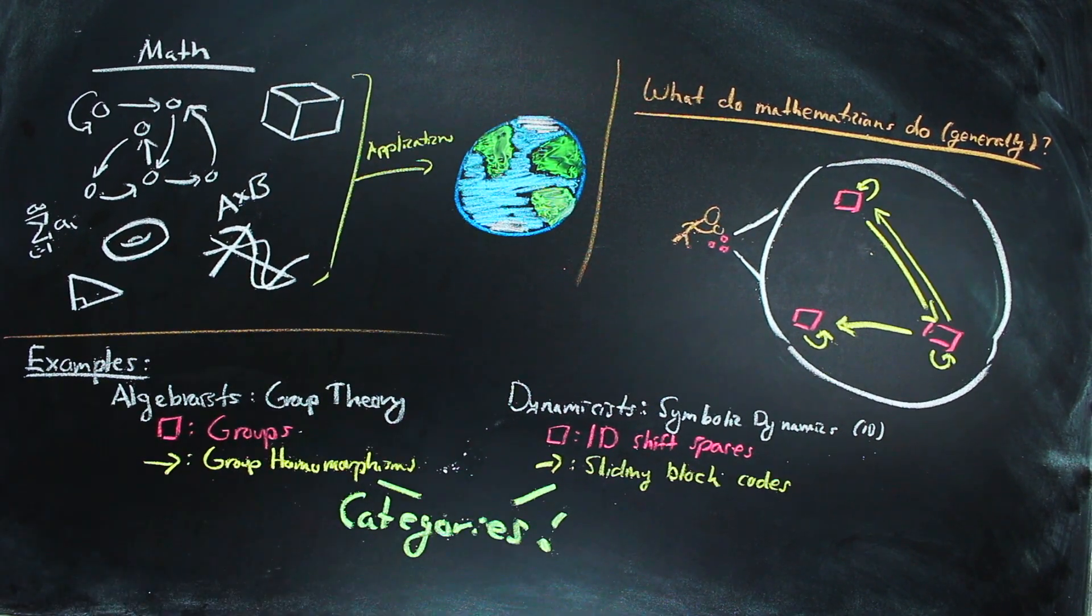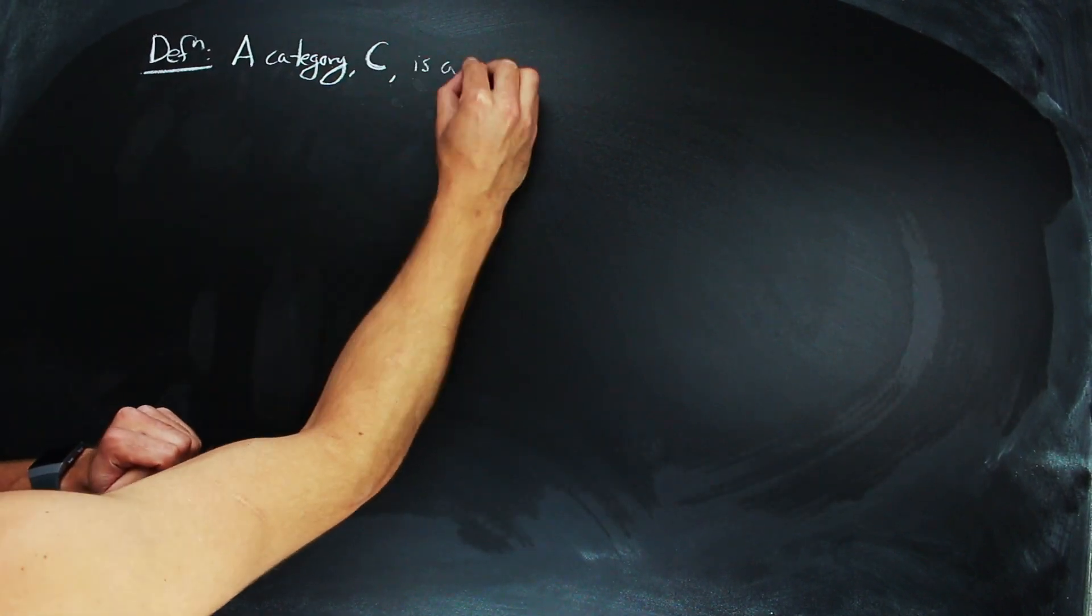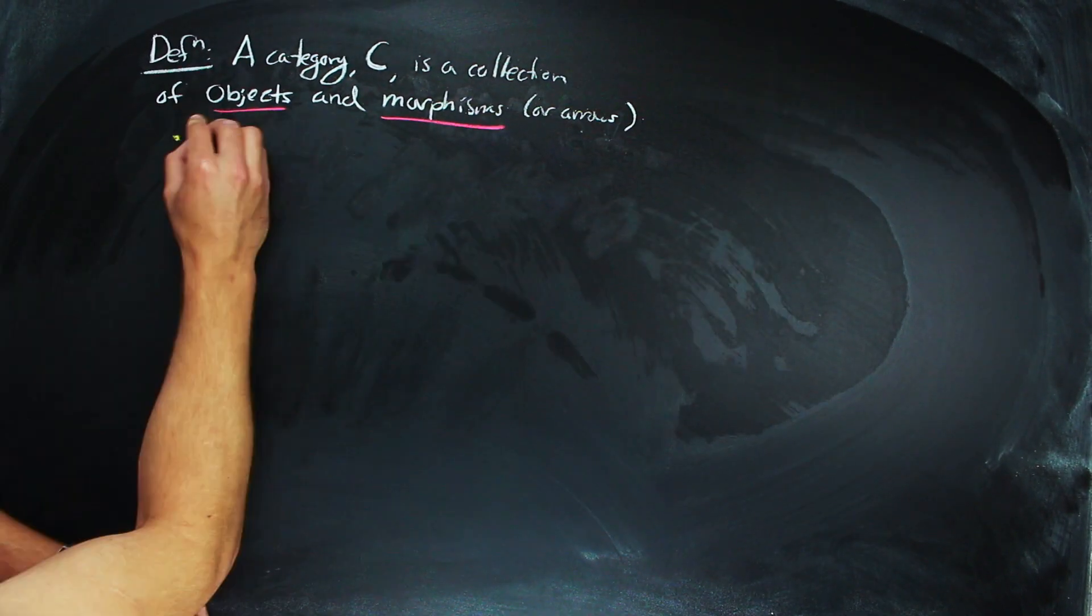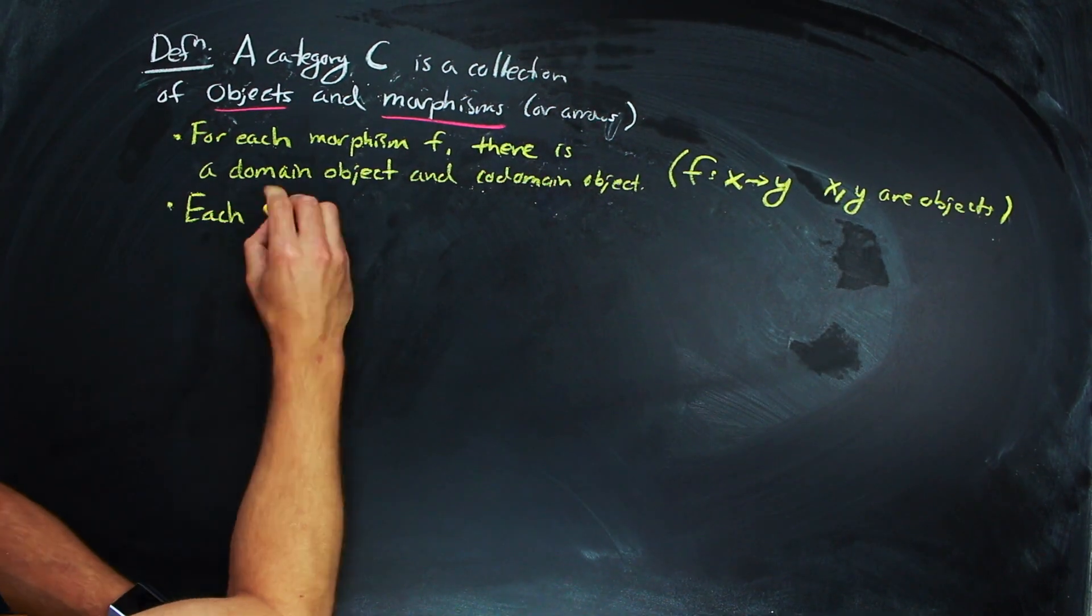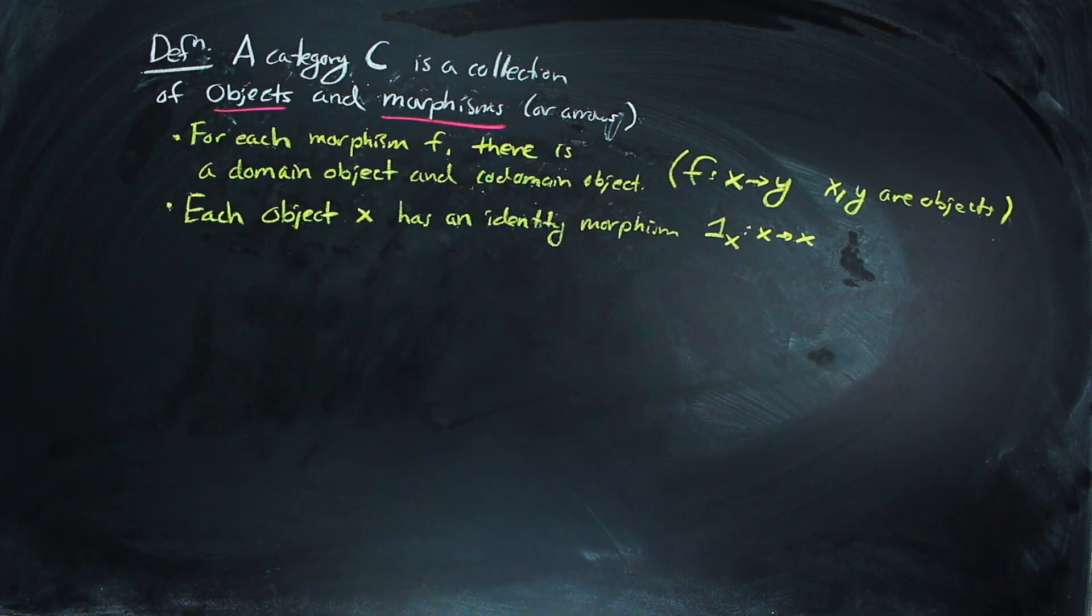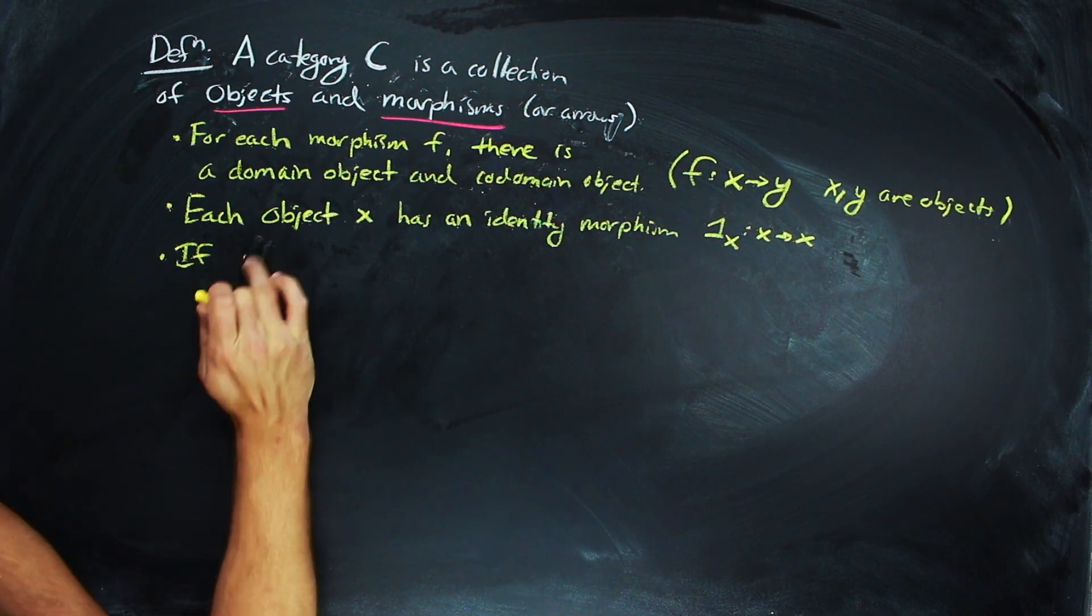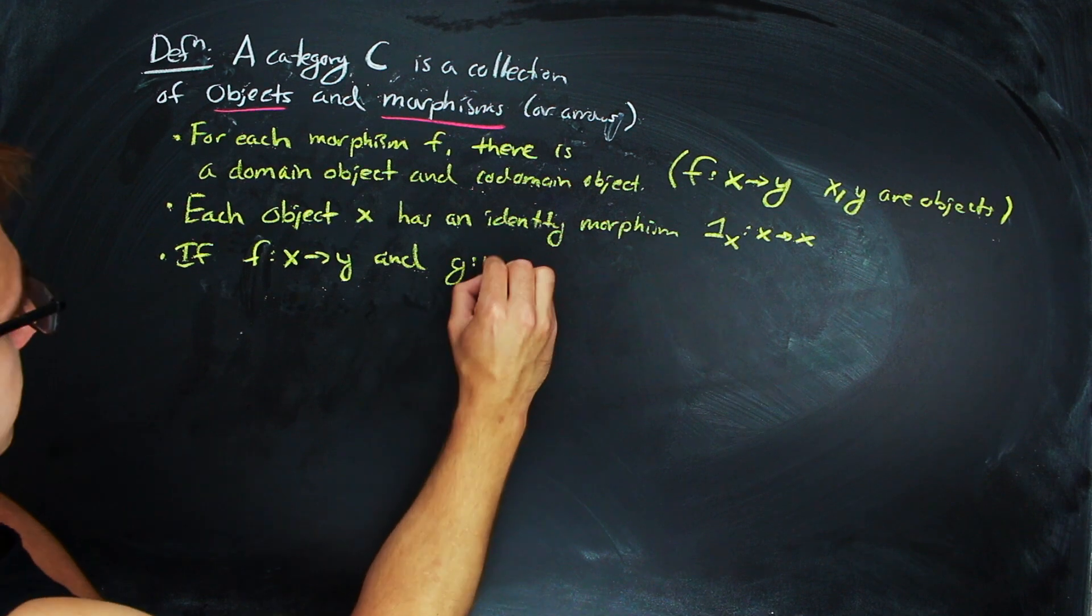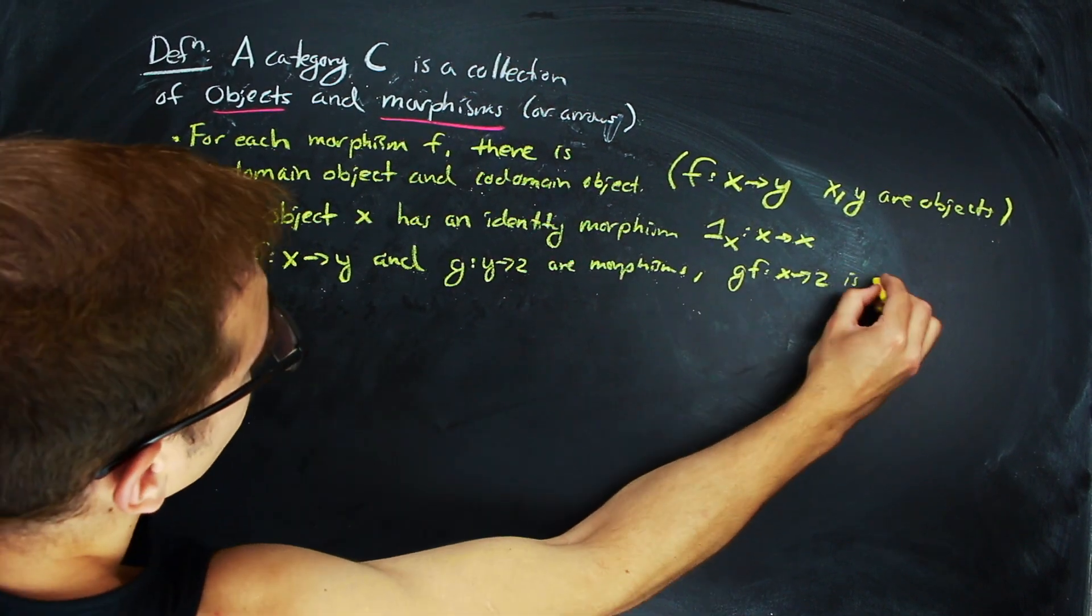Both of these groupings of objects and transformations are examples of a category. A category is a collection of objects and a collection of morphisms, or arrows, where each morphism has a domain object and a codomain object. Each object has an identity morphism. If we have two morphisms, f and g, where f goes from x to y and g goes from y to z, then the composition gf from x to z is also a morphism.